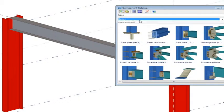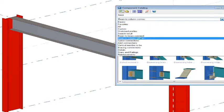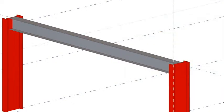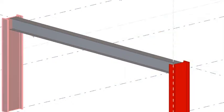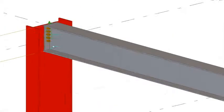To facilitate detailing of connections, Tecla Structures includes a comprehensive library of intelligent, automatic connections ranging from endplates, clip angles and tube braces, to handrails and staircases.